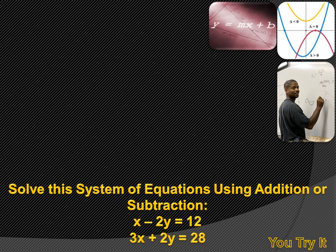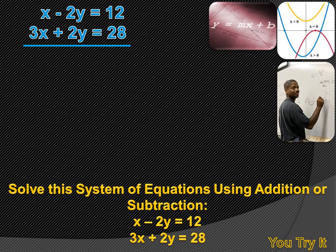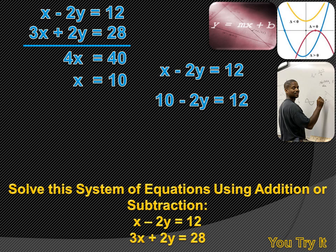We have a system of equations: X minus 2Y equals 12, and 3X plus 2Y equals 28. I want to solve this using addition or subtraction. I can see a negative 2Y in the first equation and a positive 2Y in the second, so if I add the two equations, the Y's eliminate. Adding gives 4X equals 40, and dividing by 4 gives X equals 10. Substituting 10 into X minus 2Y equals 12 gives 10 minus 2Y equals 12, then minus 2Y equals 2, so Y equals minus 1.